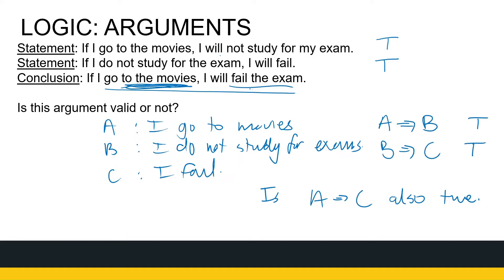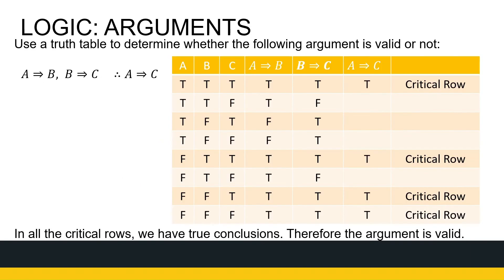We're going to look at statements A, B, and C — A implies B, B implies C — and check the truth values, because we want this statement to be valid. We're going to draw a truth table. I've already filled it in — you can pause and make the whole truth table to practice. So here's my argument: A implies B is true, B implies C is true, therefore I want to conclude A implies C.